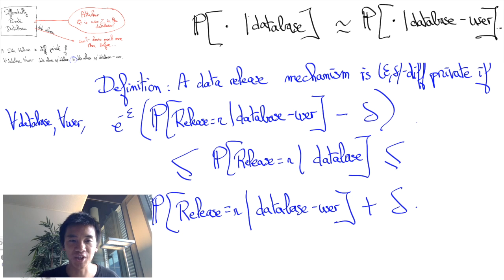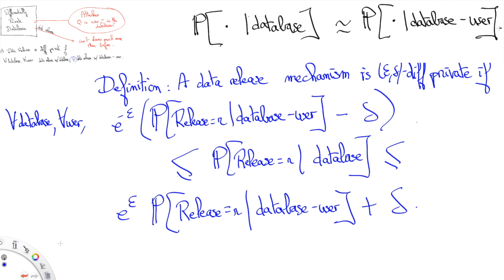Now, this is not the actual precise definition, and this is because of the case where the released data is some real number, in which case the probabilities here are all 0s and it's just meaningless. So to address this, we have a slightly more technical definition which corresponds to considering the probabilities that the released data belong to some set S for all sets S.